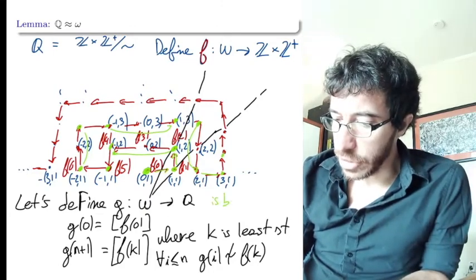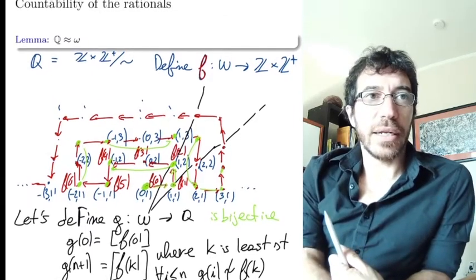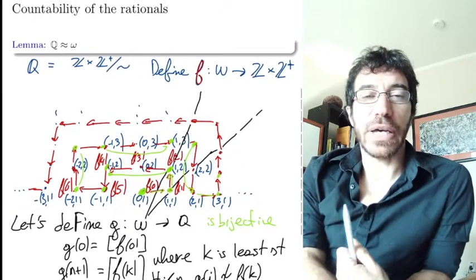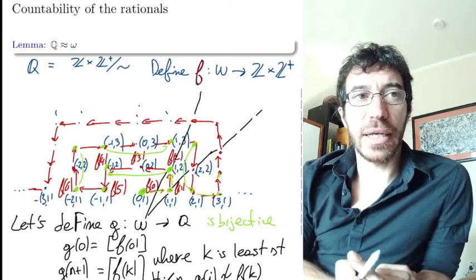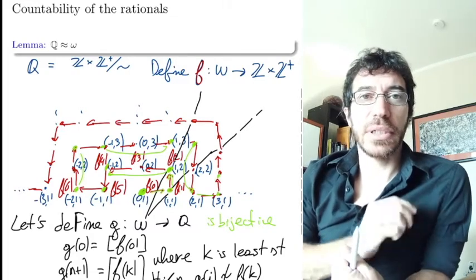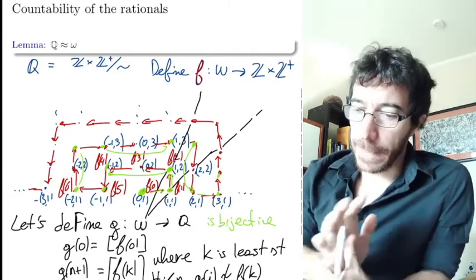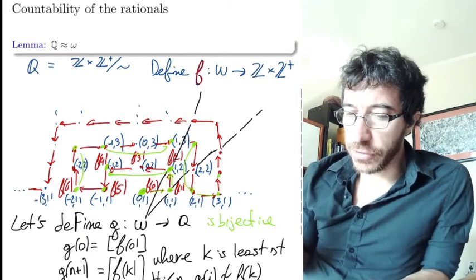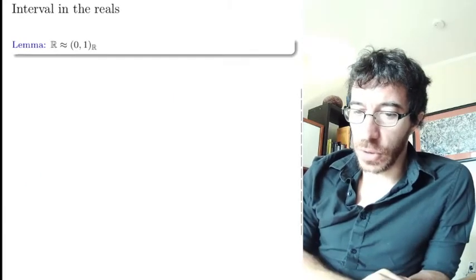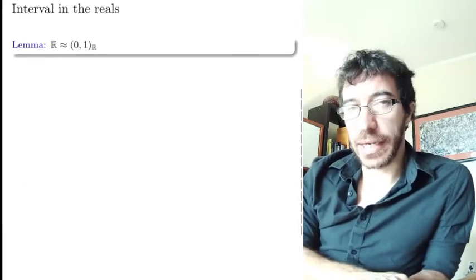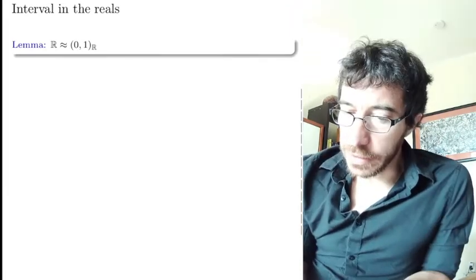So that's how you get a one-to-one correspondence between the rationals and the natural numbers — they have the same size, the same cardinality. Even though there look like there are many more rationals than natural numbers, they have the same cardinality. Here is another example.